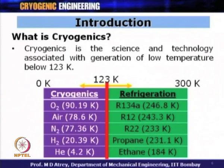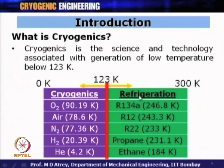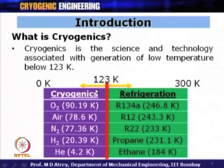The logic behind the 123 Kelvin boundary is that gases on the cryogenic side were historically called 'permanent gases' — believed to be impossible to liquefy. Even pressurizing them to 300–400 bar at room temperature would not liquefy them; one must first cool below room temperature before liquefaction. In contrast, refrigerant gases on the other side of this boundary can be liquefied at room temperature by pressurization alone. This distinction gave rise to the ~120 Kelvin dividing line between cryogenics and refrigeration.